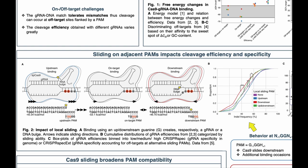Consider an on-target binding site that has two Gs required for the NGG PAM, but is also flanked by other Gs — the N in NGG is a G, and there is also a G downstream. If Cas9 binds to an upstream GG PAM motif, the guide RNA could still bind to the DNA by forming an RNA bulge. From this conformation, we expect Cas9 to slide on the DNA to match the on-target PAM, resolving the RNA bulge, and increasing complementarity and therefore the stability of the guide RNA–DNA binding.